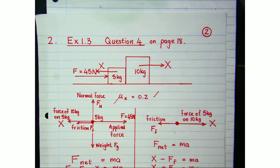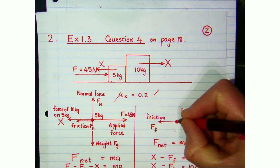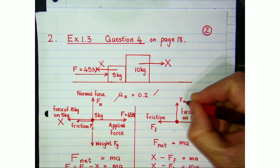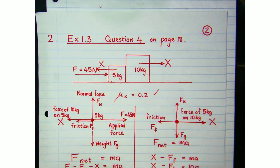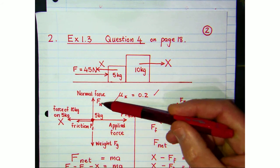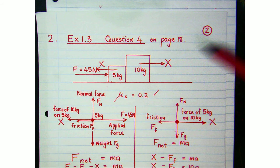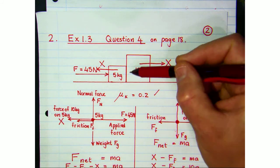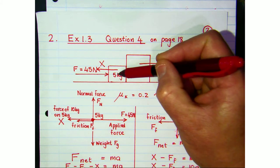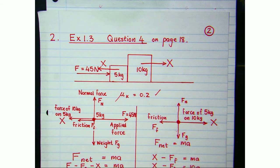For the free body diagram of the 10 kg box: it has a normal force from the ground and its weight acting vertically. Since all other forces are horizontal, the normal force equals the weight exactly — no angled force components to consider. This normal force value will be used to calculate the frictional force acting on the 10 kg box.